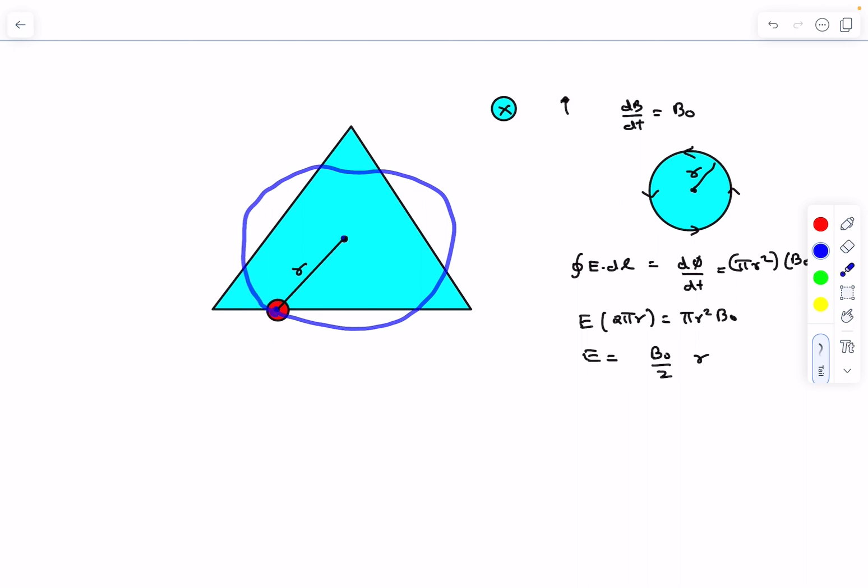So if you assume a loop something like this of radius r, we know that the electric field's direction will be tangential to the circle, or you could say perpendicular to the radial vector. So the direction of the electric force is going to be in this direction, and the magnitude is going to be q, which is the charge of the particle, times the electric field, which is B0 divided by 2 times r.